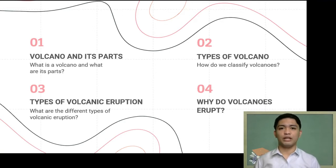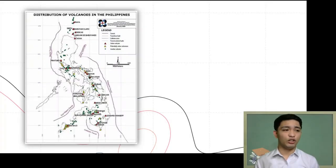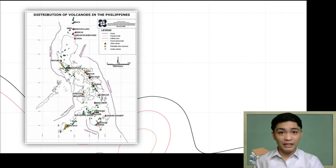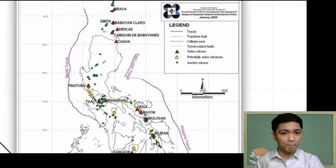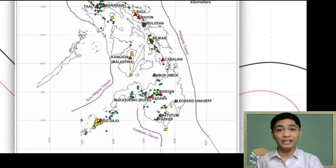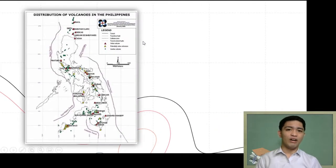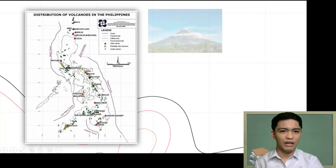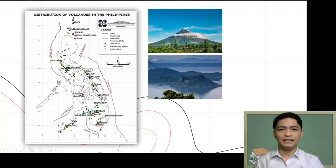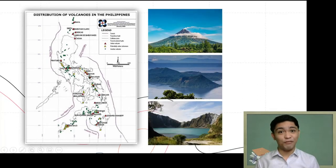The Philippines is home to about 300 volcanoes, according to the Philippine Institute of Volcanology and Seismology, or PHIVOLCS. As you can see on the map on the screen, there really are a lot of volcanoes in the country. Here are pictures of three of the most significant volcanoes in the country — can you identify or name them?